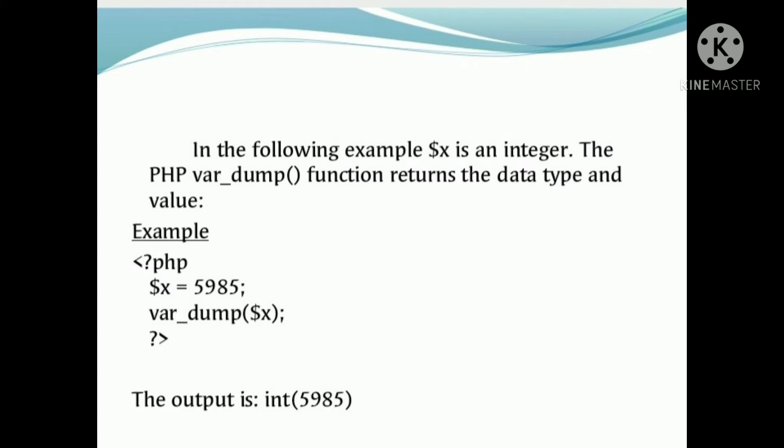We use the var_dump function. var_dump is a function that takes a parameter — we specify the variable name to check which data type that variable holds. In this program, $x is 5985, so $x is an integer data type. In a large program with thousands of lines, we can use var_dump to identify the data type of any variable.